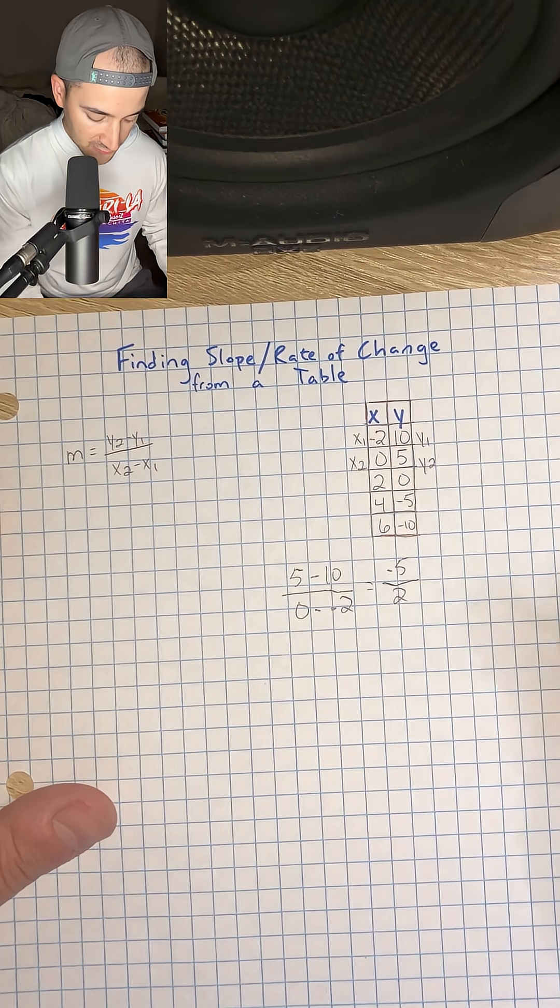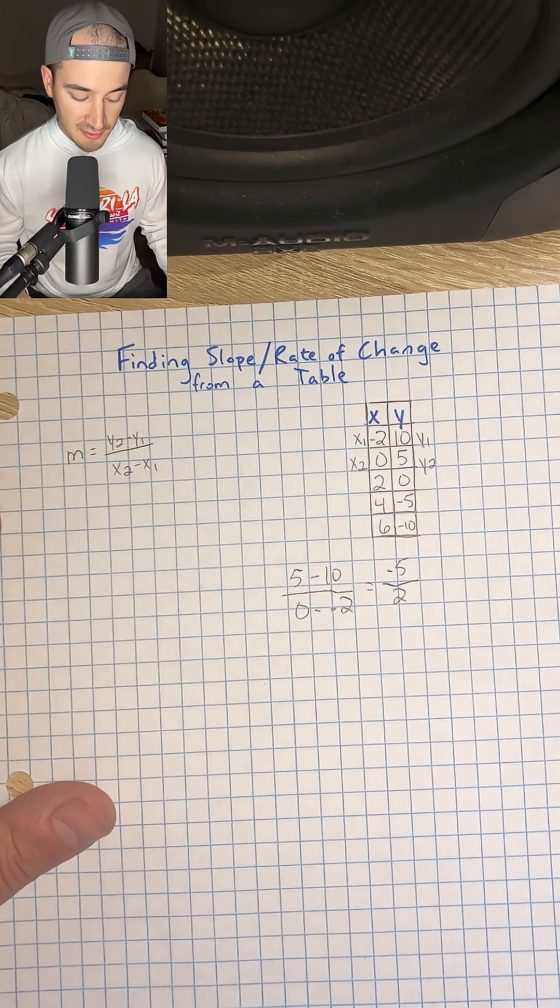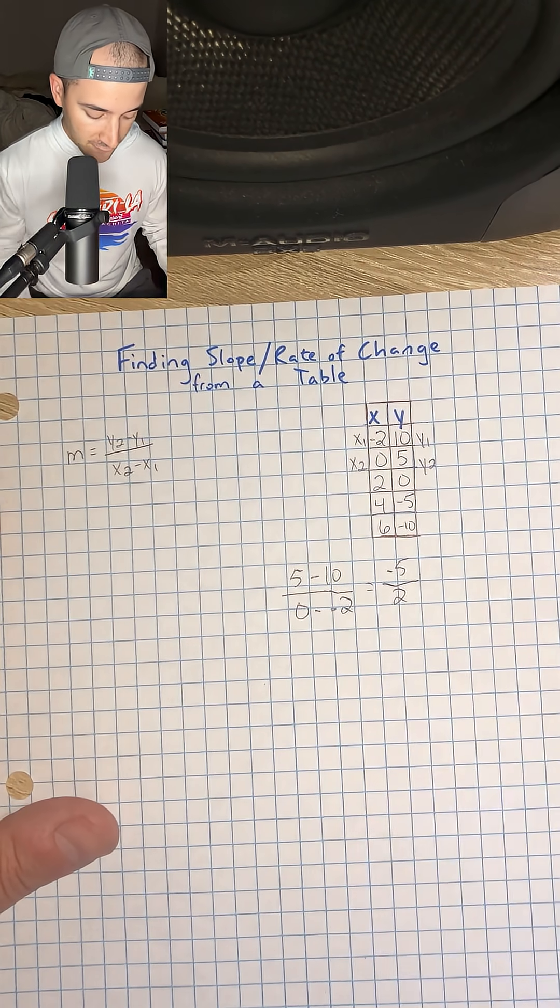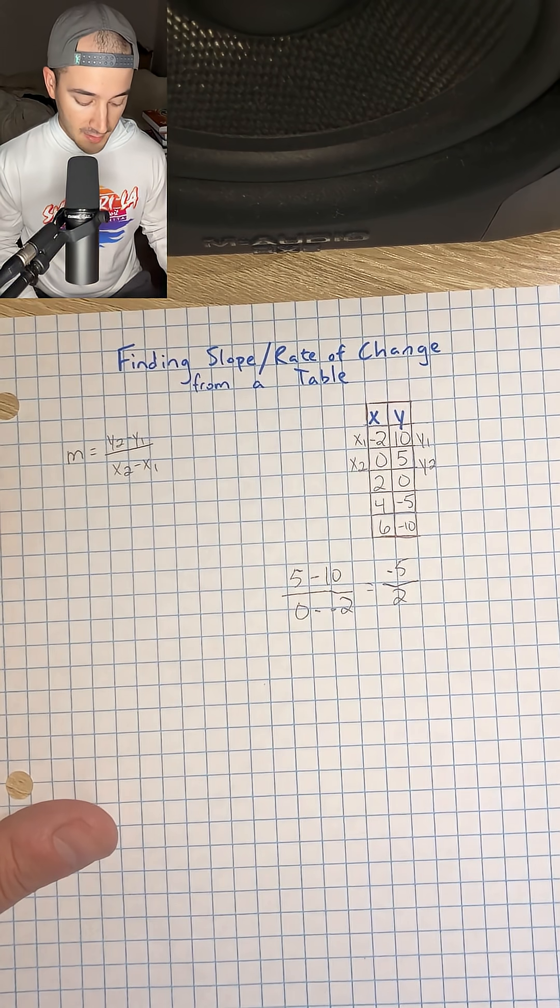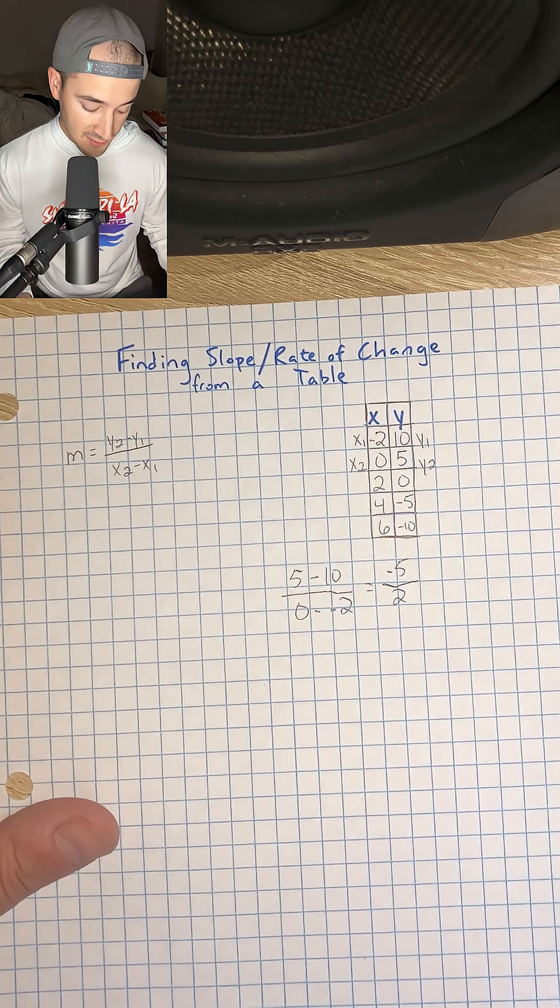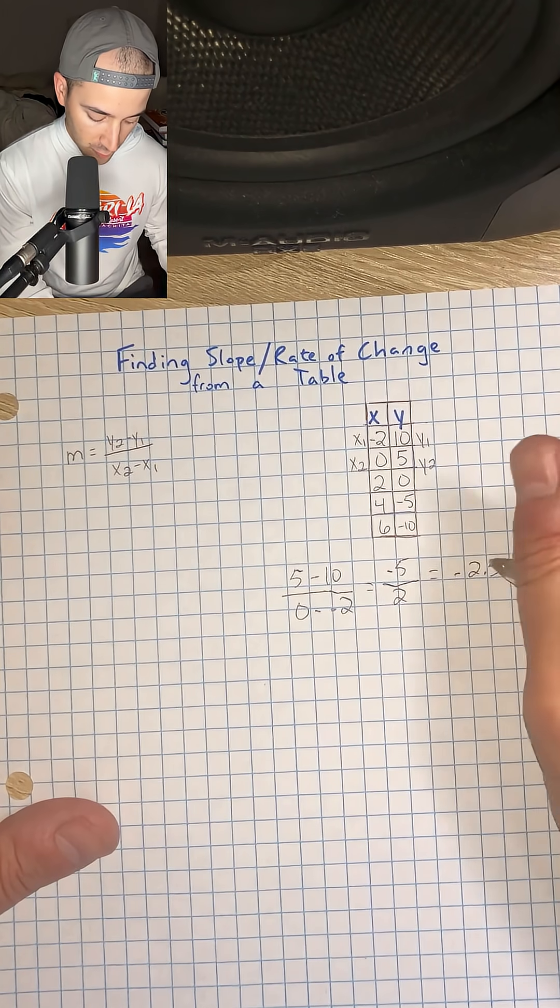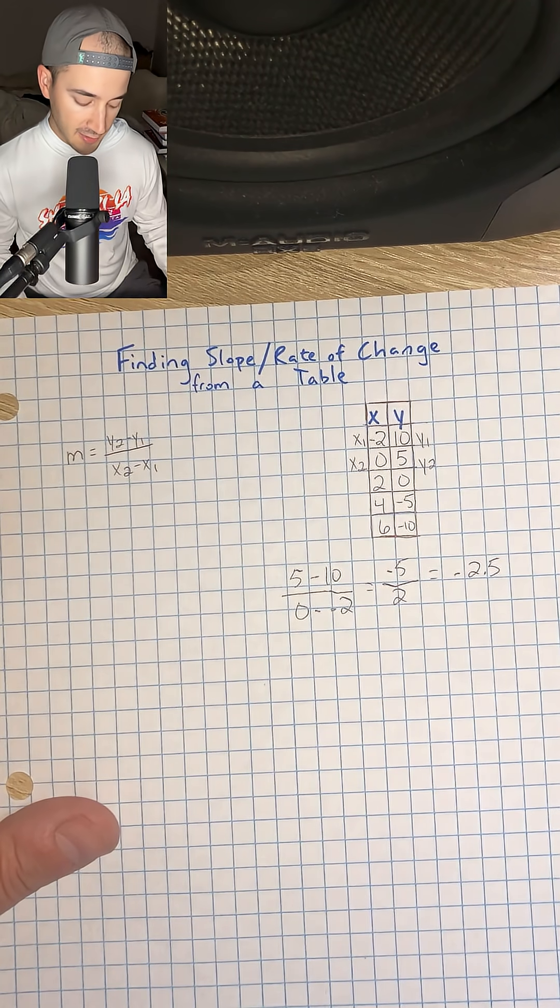Which is positive 2. So that means our slope, or our rate of change for this table, is equal to negative 5 over 2. And so that would be our answer. That would also be equal to negative 2.5 in case they wanted it in decimal form.